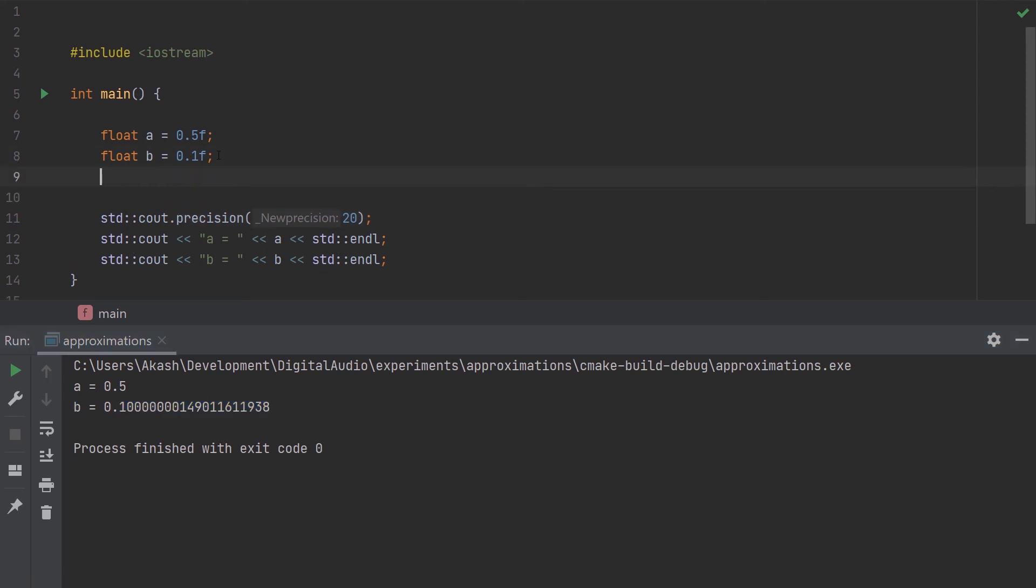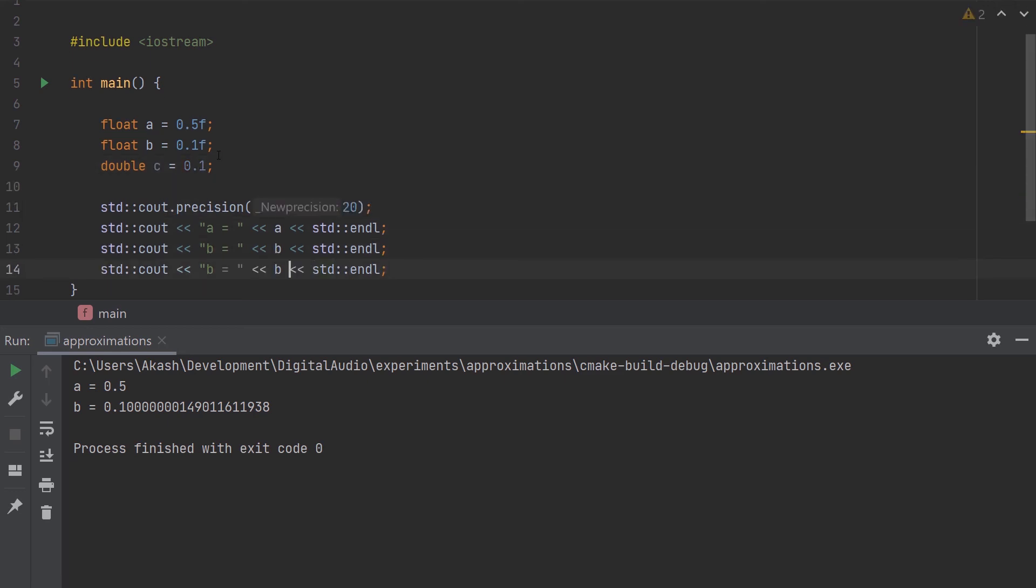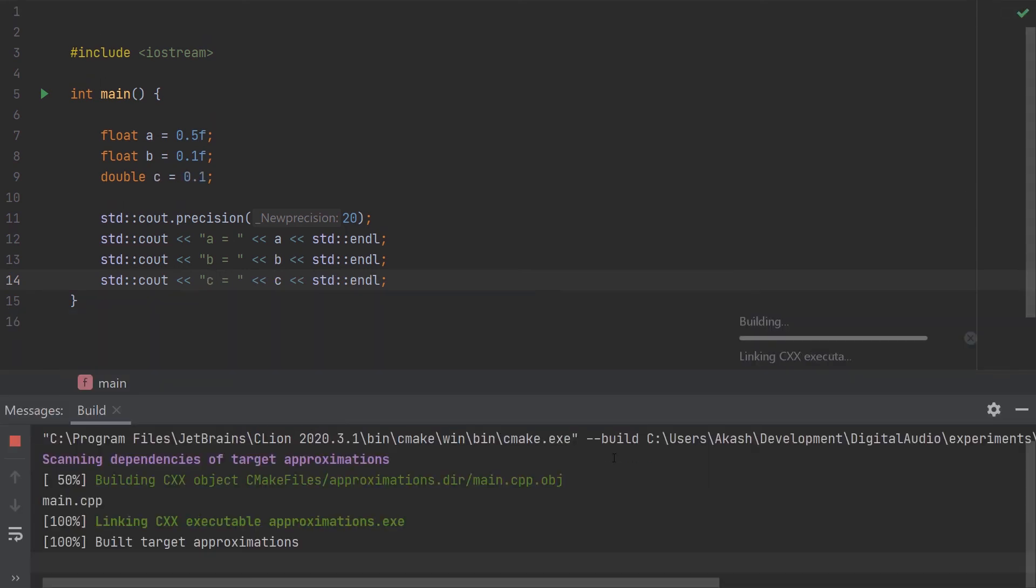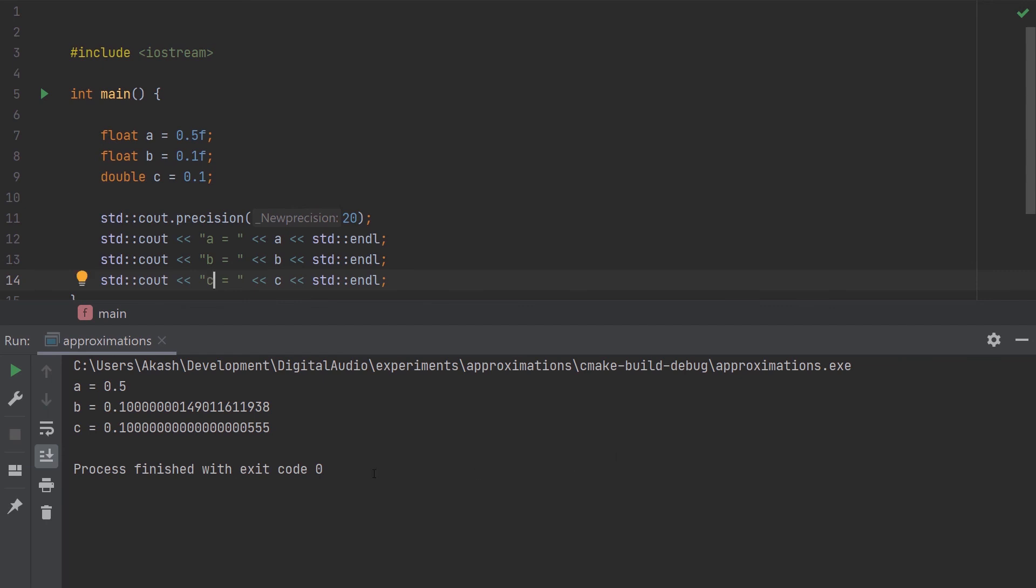We can try to increase the accuracy by storing the value as a double, which is a double precision floating point number, an extension of the normal float. With double, we get 52 bits of precision, and it's a lot more accurate, but if we print it out, we still end up with the same problem. It loses precision at some point, albeit at a much later point when compared to floats.